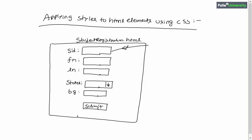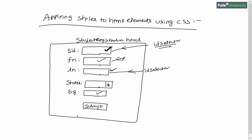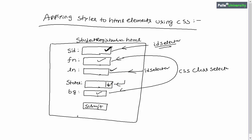I will apply styles to the SID control using an ID selector, and also apply the same style to the last name using the ID selector. For first name and blood group I will apply styles using a CSS class selector. For the states drop-down list I will use a CSS element selector, and for the submit button I will use an element and attribute selector.